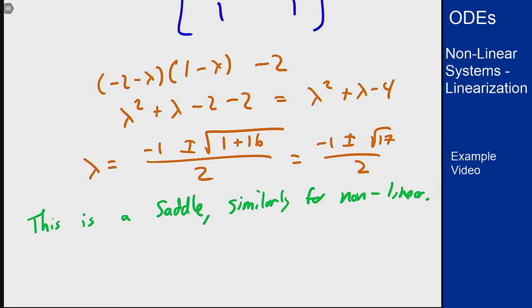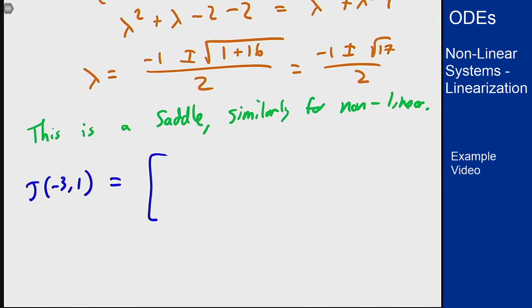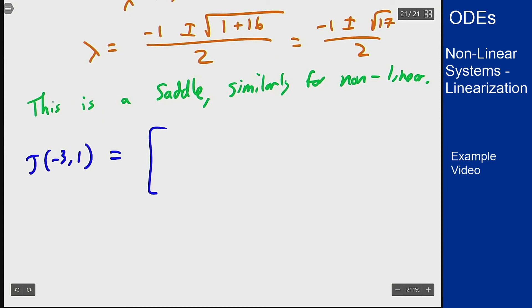What about the other point? The other point was at (-3, 1). For this we get y minus 1 which is 0, x minus 2y plus 1 is -3 minus 2 plus 1 is -4 and the bottom is still 1, 1.